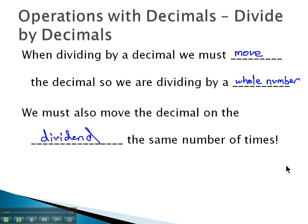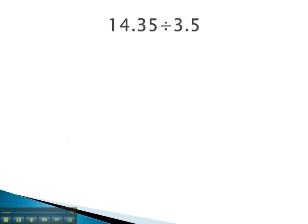So, for example, if we were dividing 14.35 by 3.5, we start with the 3.5 in front and the 14.35 inside. Right now, we're dividing by 3.5.